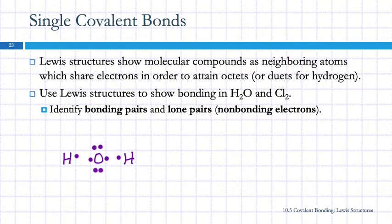We're going to figure out, can they share electrons in such a way that they'll all have an octet? Or, for hydrogen, a duet. If this oxygen shares one electron with hydrogen, and hydrogen shares one electron with the oxygen, that forms a bond. That's a pair of shared electrons.